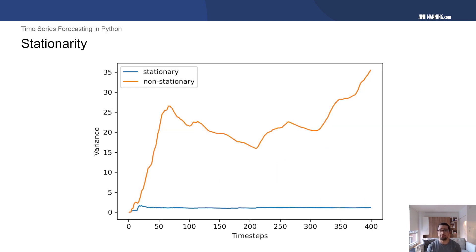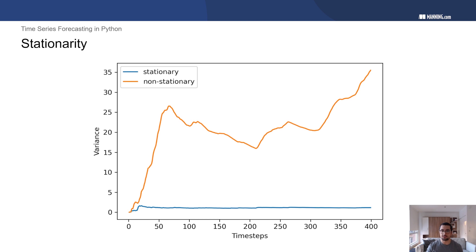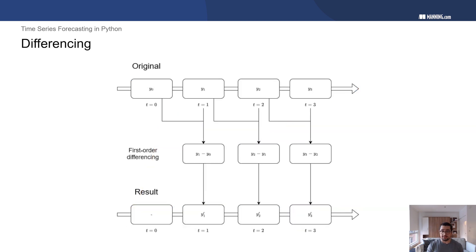The same happens with the variance. Giving a few time steps for the variance to stabilize, you see a flat blue line telling us that the variance is indeed constant over time for the stationary process. However, for the orange non-stationary process, variance is again a function of time — it is changing. In order to make our series stationary, we need to apply transformations.